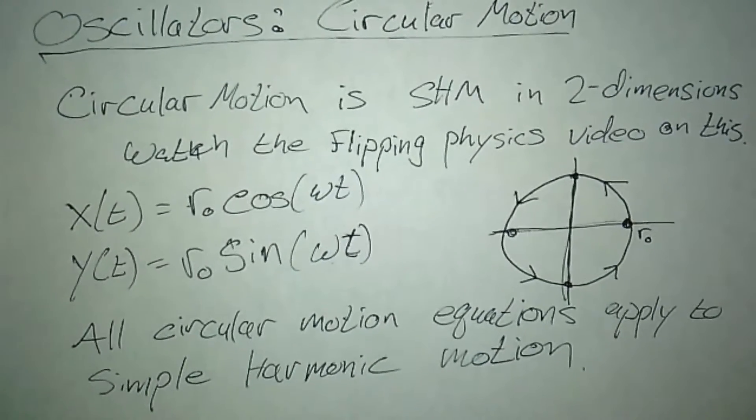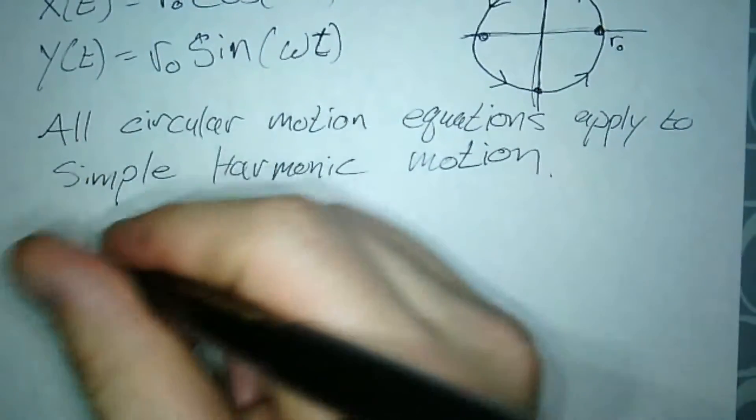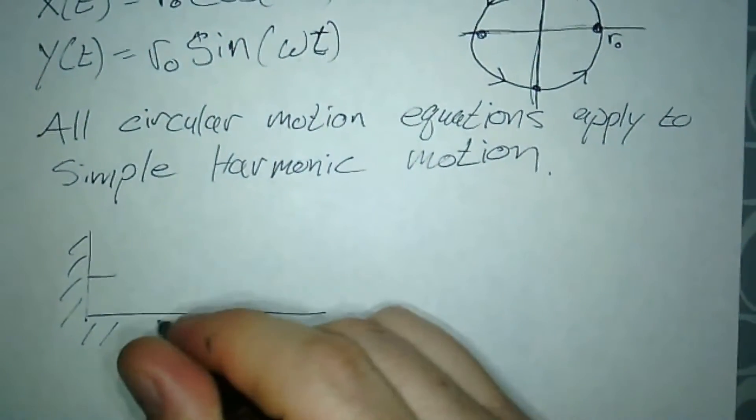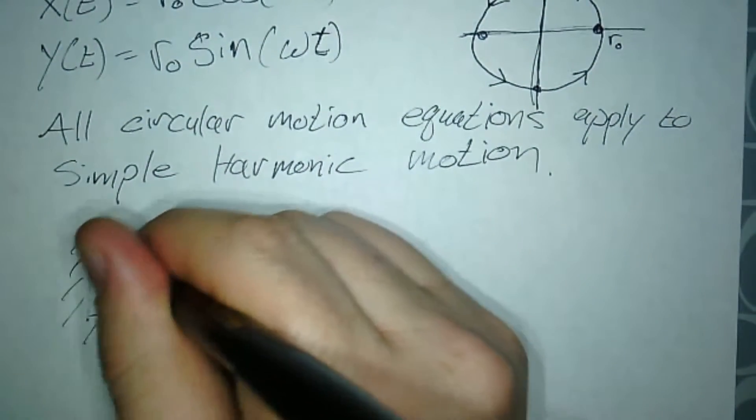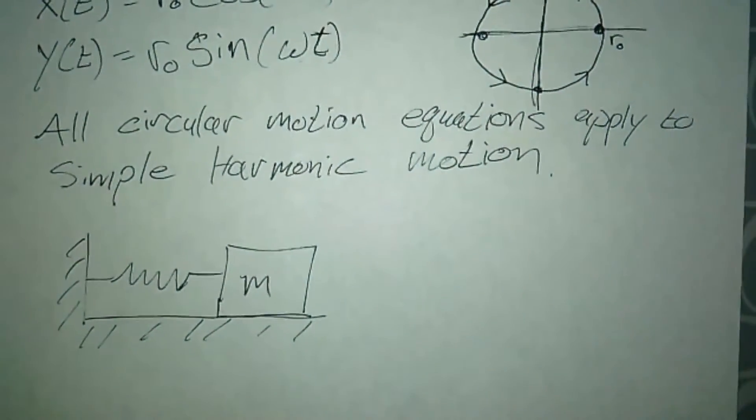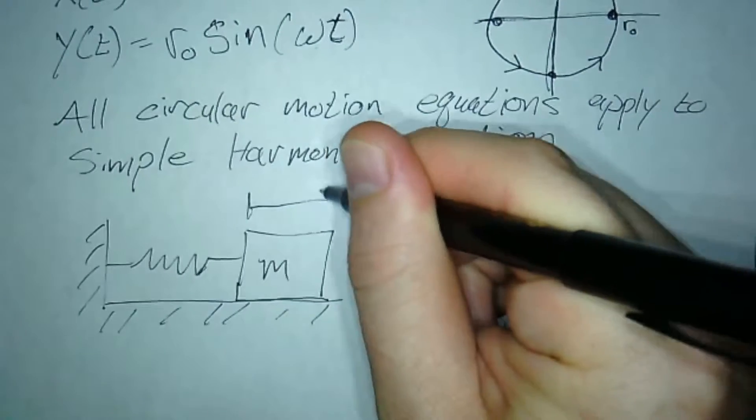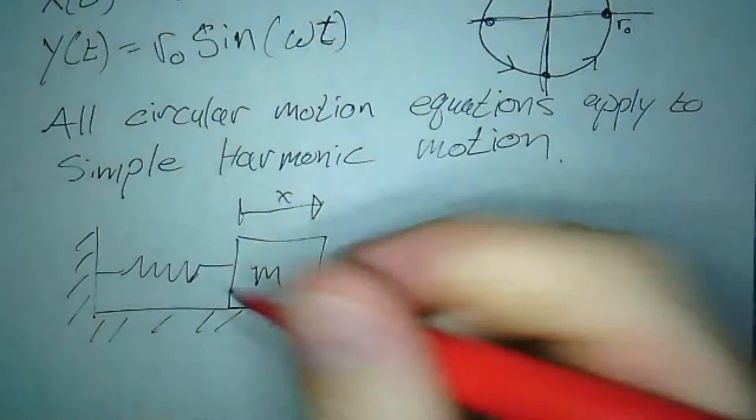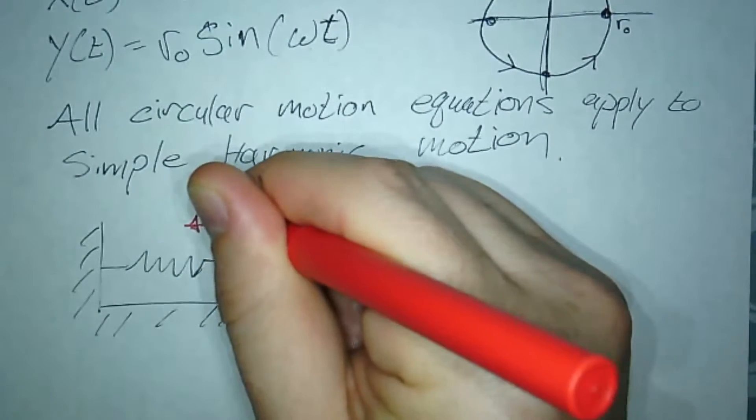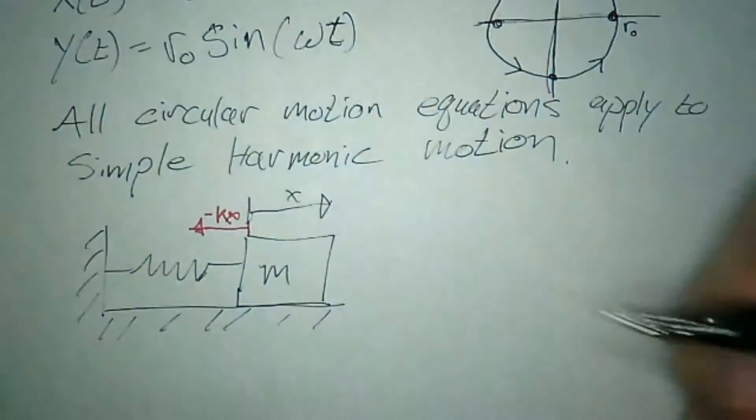Using that idea, I could look at a spring example with a mass-spring system. If I pull this and displace it a distance x, the force is going to be this way with a value of -kx, or magnitude |F| = kx.